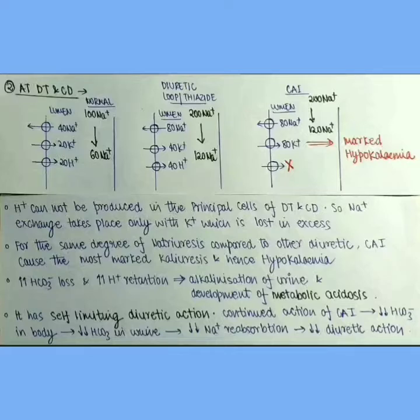In normal condition if we suppose 100 Na+ comes in the DT and CD region of which 40 Na+ is reabsorbed and 60 Na+ is secreted into the lumen. To maintain the charges 20 K+ and 20 H+ are secreted into the lumen.